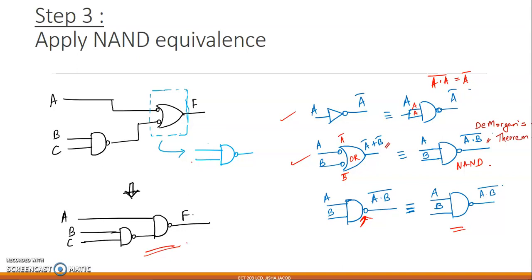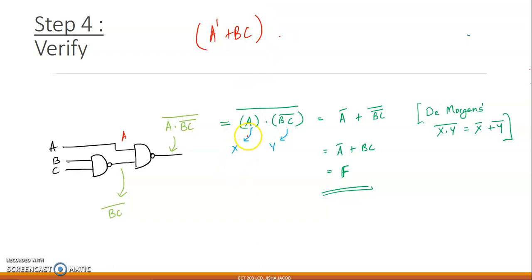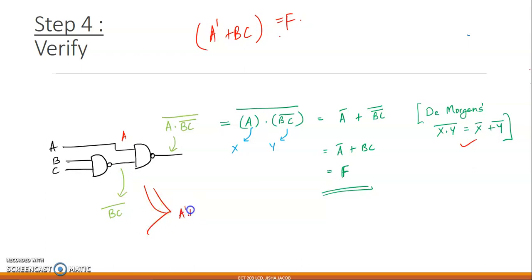To verify: from the circuit, one input is A and the other is bc whole bar. The output of the final NAND gate is A·(bc)̄ whole bar. By De Morgan's theorem, treating A as X and bc̄ as Y, we get X̄ + Ȳ = A̅ + (bc̄)̄ = A̅ + bc. This is our original function F = a̅ + bc — confirming this successfully represents the NAND-only circuit.